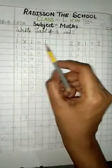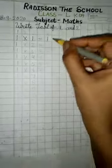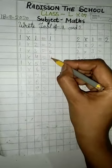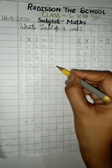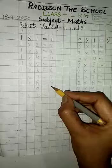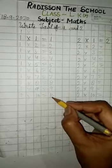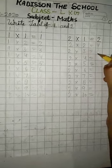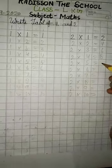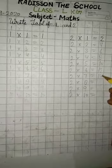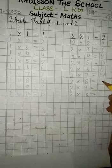1 times 1, 1 times 2, 1 times 3, 1 times 4, 1 times 5, 1 times 6, 1 times 7, 1 times 8, 1 times 9, 1 times 10.